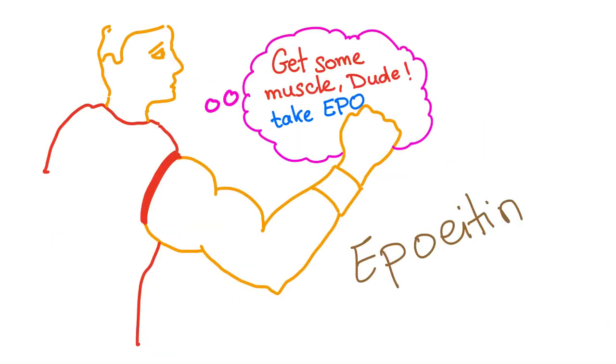EPO increases the RBCs to carry more oxygen, so we get more energy. That's why some athletes take an artificial form of EPO called epoetin to increase energy. That's why this man is happy after taking artificial epoetin—it's made by DNA recombinant technique.